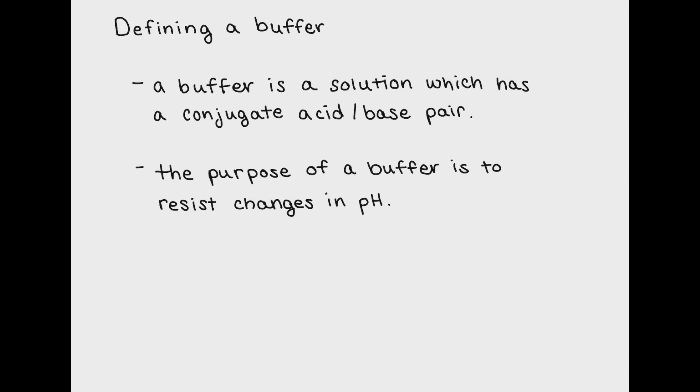A great example of a buffered system is blood. The human body relies on a buffer to keep the pH of blood within a certain range. This is because changes in the pH of our blood can be very dangerous.